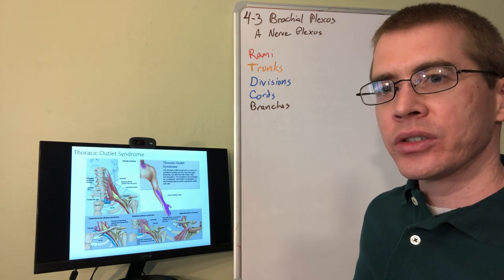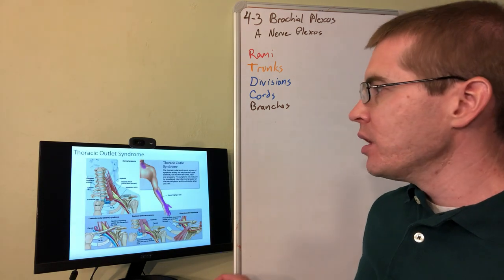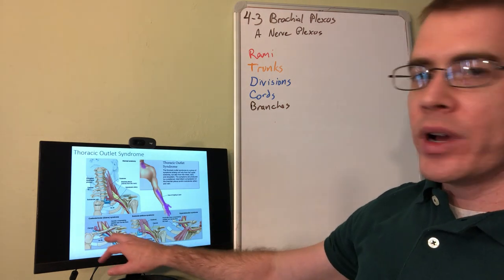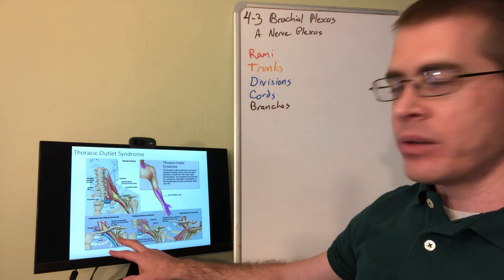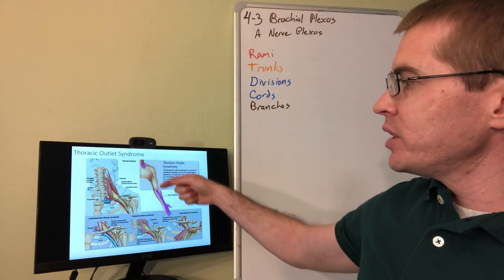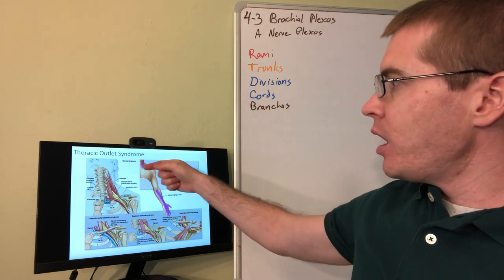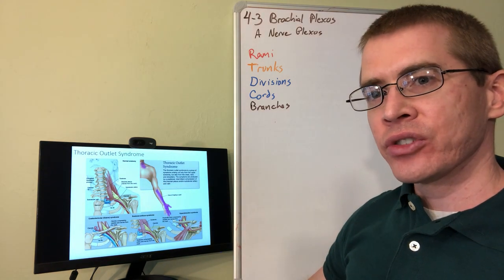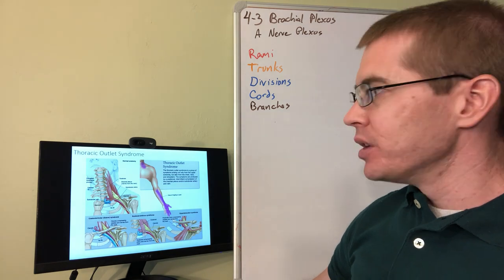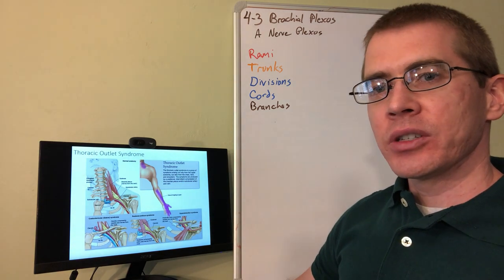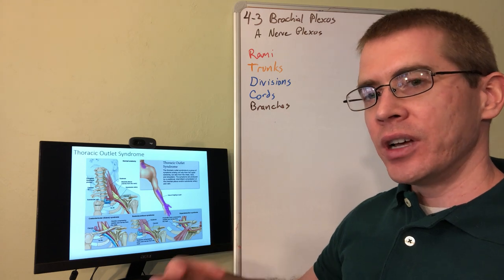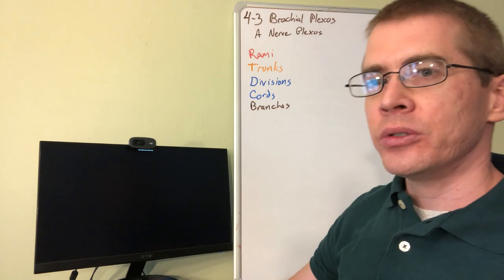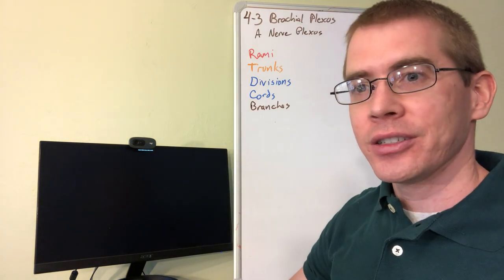All right, that should be it. Thanks for watching. Take a look over thoracic outlet syndrome because there are different ways in which the brachial plexus can be impinged, resulting in very precise patterns of numbness or tingling or sensory loss or motor loss. So thoracic outlet syndrome is one of these important conditions that you need to understand and to be able to diagnose. Anyway, I hope you enjoy studying brachial plexus. See you later.